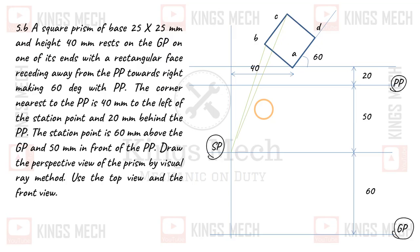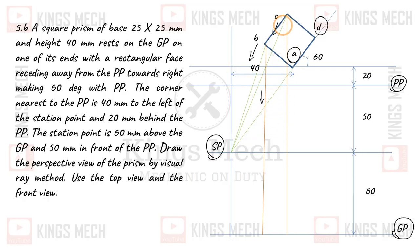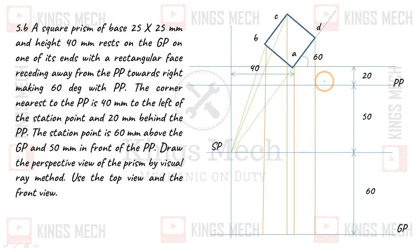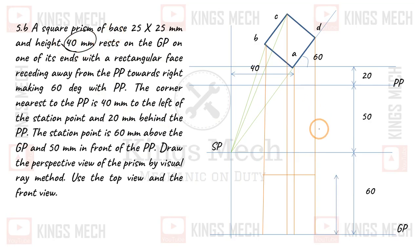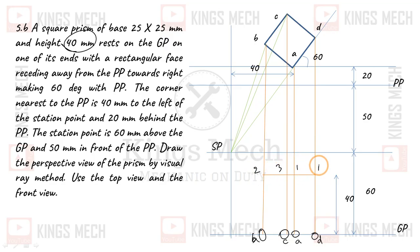B is joined with A and D is the same. Point B is joined with the station point; C is joined; A and D are joined. In the top view projection, C is bottom-projected, then A is bottom-projected, and finally D is bottom-projected — four lines all meeting at the station point. The prism height is 40mm, so the 40mm line gives points 1, 2, 3, 4. This is C, this is A and D.